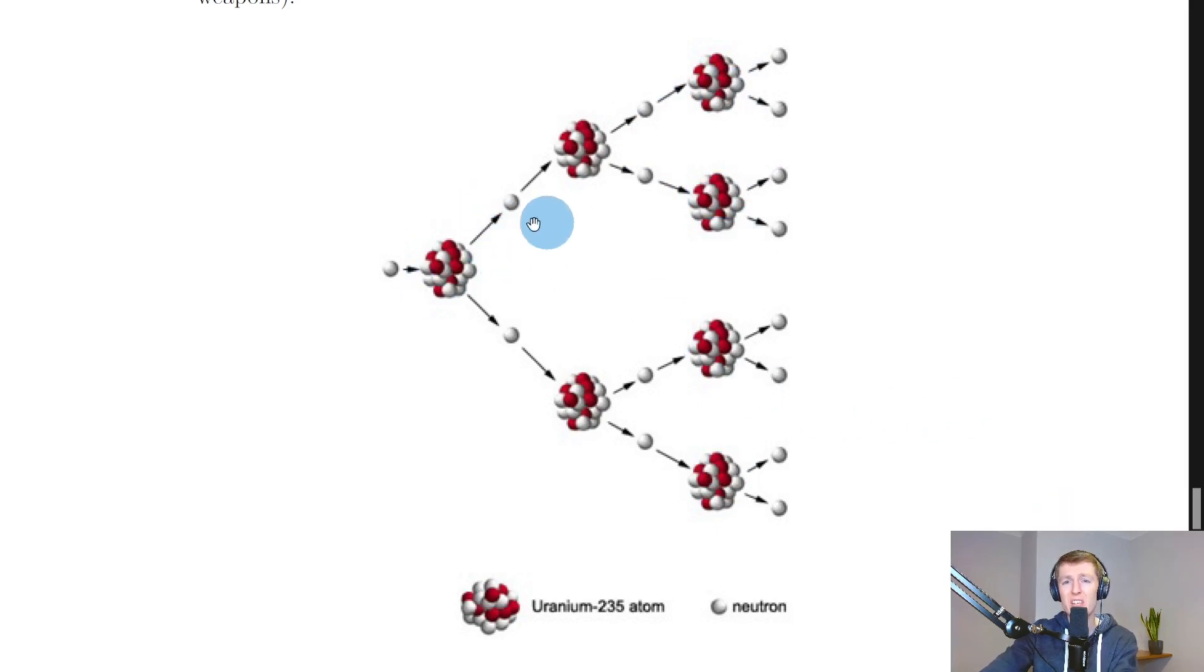Now you can imagine that as each reaction releases energy, as you get more and more reactions being produced, the energy being produced will start building and start multiplying. And that is why in nuclear fission reactors we need to be able to control this chain reaction and actually control how many neutrons are going to go on and cause more fission reactions.